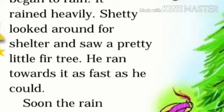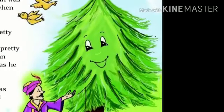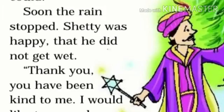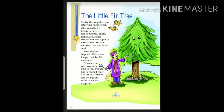Shetty looked around for shelter and saw a pretty little fir tree. He ran towards it as fast as he could. He was finding a place to save himself from the rain, and he found it — the fir tree. When he saw the fir tree, he speedily went there. Soon the rain stopped. Shetty was happy that he did not get wet — he was still dry.